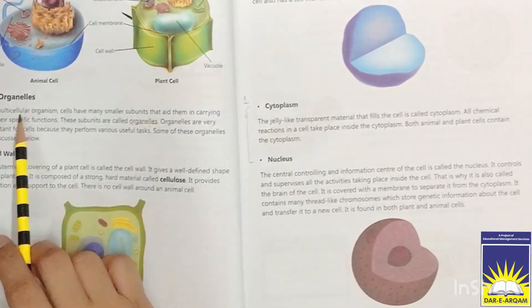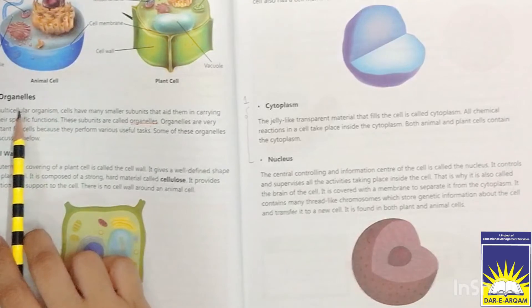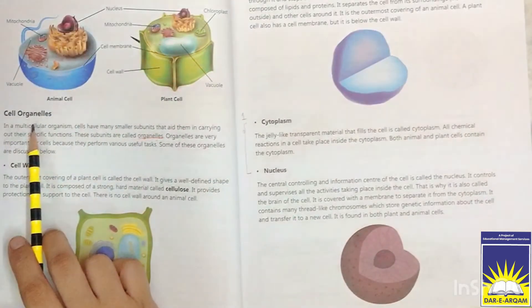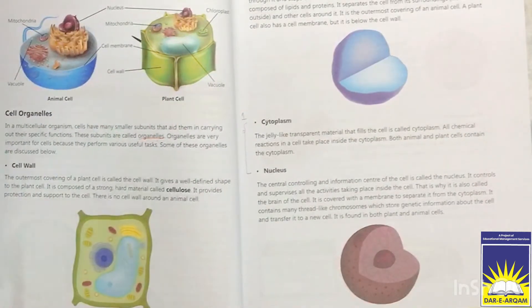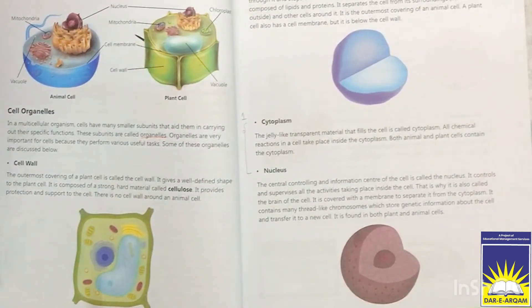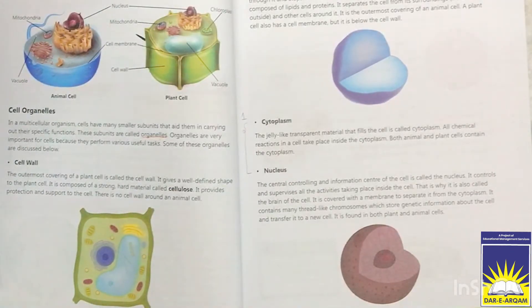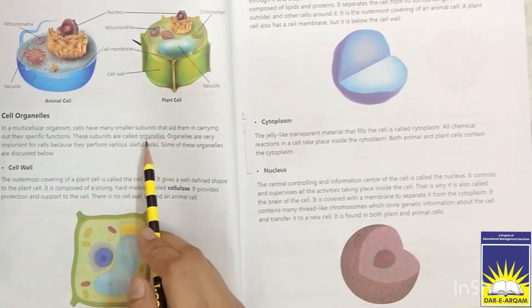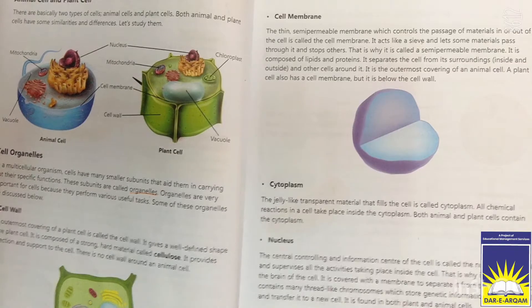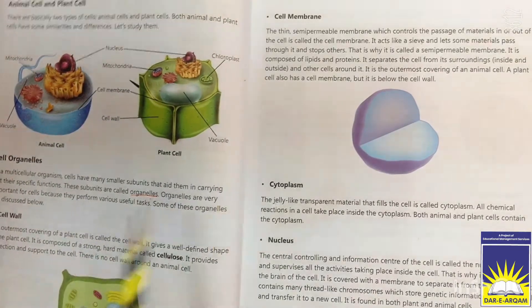What are cell organelles? Cell organelles are, in multicellular organisms, the many smaller sub-units which help to perform specific functions. All these units are called organelles. So students, first we will study cell wall and cell membrane.